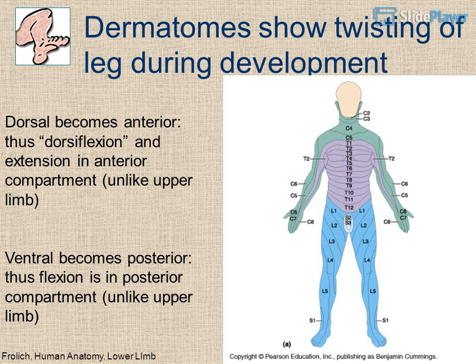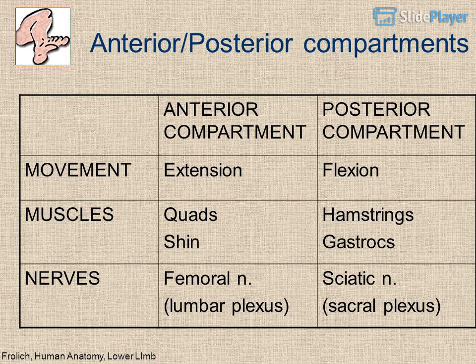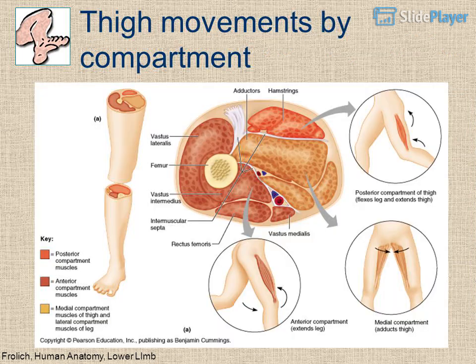Due to developmental twisting, the dorsal surface becomes anterior, so dorsiflexion and extension occur in the anterior compartment — unlike the upper limb. The ventral surface becomes posterior, so flexion is in the posterior compartment — unlike the upper limb. Anterior compartment: extension, quadriceps/shin muscles, femoral nerve (lumbar plexus). Posterior compartment: flexion, hamstrings/gastrocs, sciatic nerve (sacral plexus).